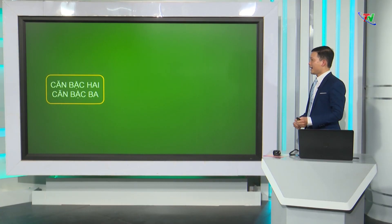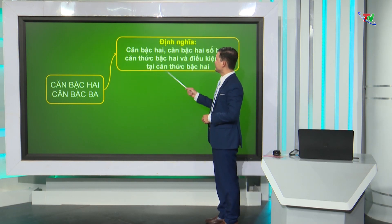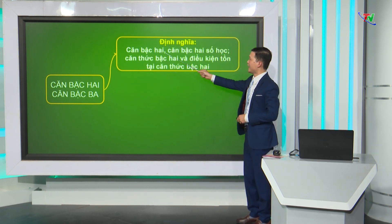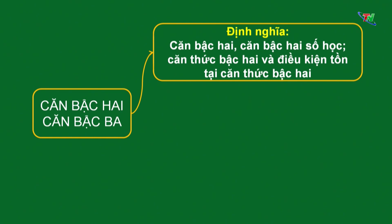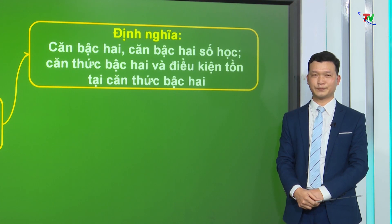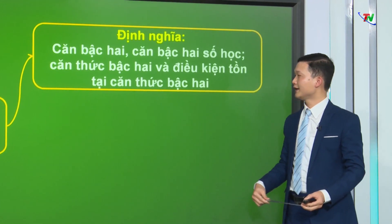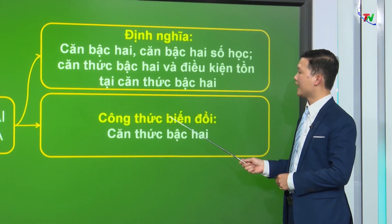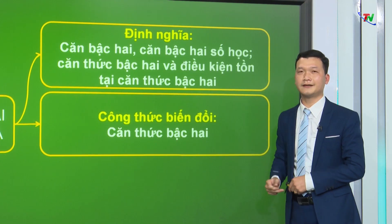Trước tiên chúng ta sẽ cùng ôn lại phần lý thuyết của chủ đề này. Về chủ đề căn bậc 2, căn bậc 3, các em cần nắm được: thứ nhất về định nghĩa căn bậc 2, căn bậc 2 số học, căn thức bậc 2, điều kiện tồn tại của căn thức bậc 2. Điều kiện tồn tại của căn thức bậc 2 là biểu thức trong căn lớn hơn hoặc bằng không. Lý thuyết thứ 2 các em cần nắm là các công thức biến đổi căn thức bậc 2.